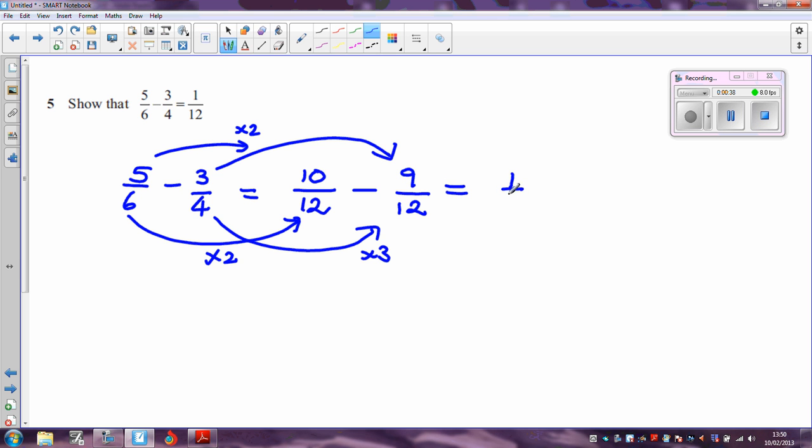10 twelfths then, take away 9 twelfths, is equal to 1 twelfth. That should do it.